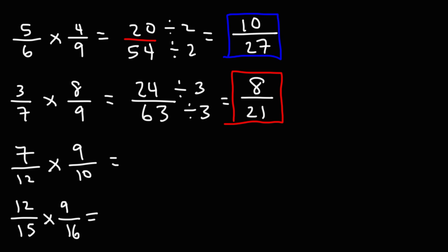Now let's try the next one. 7 times 9 is 63. 12 times 10 is 120. We could divide both of these numbers by 3. We know that 63 divided by 3 is 21. 120 divided by 3 is 40. And that is about all we can do for this problem. So it's 21 over 40.